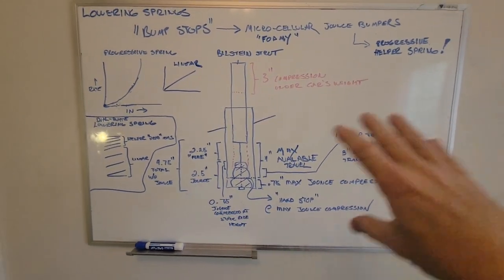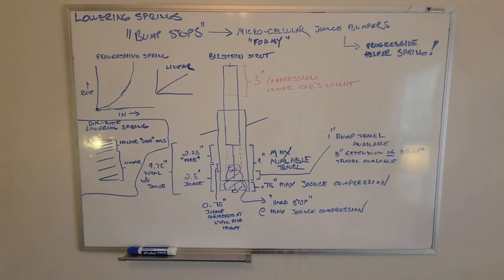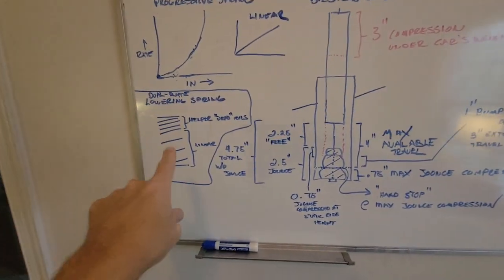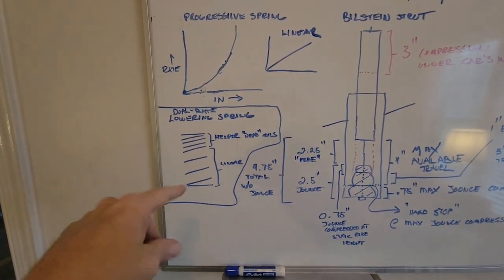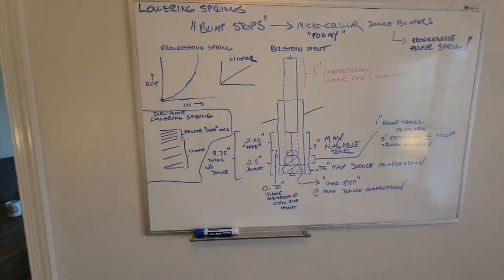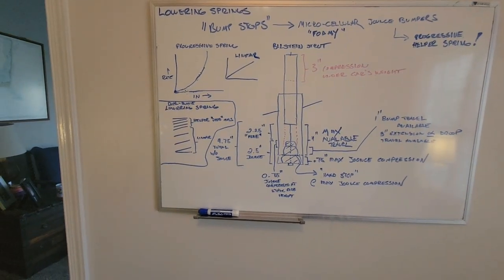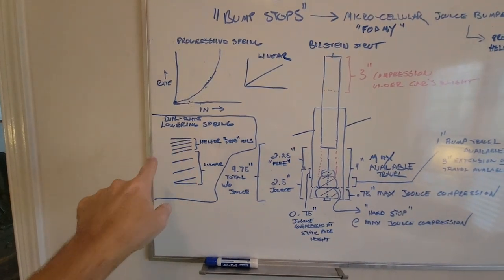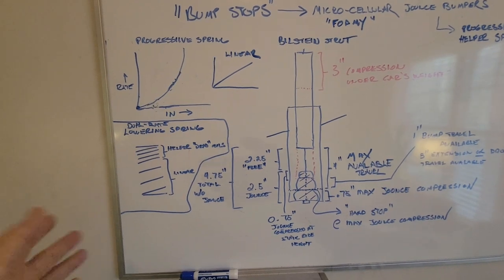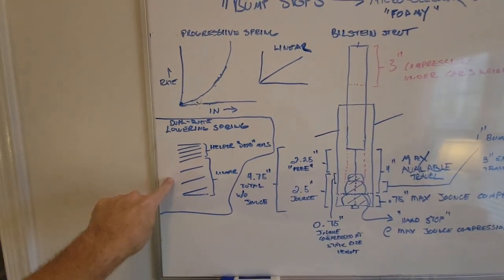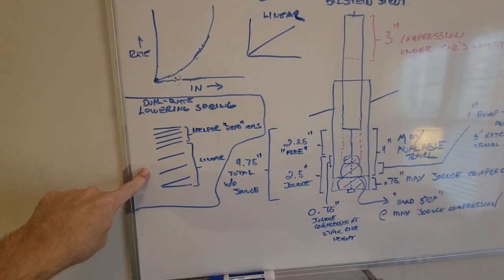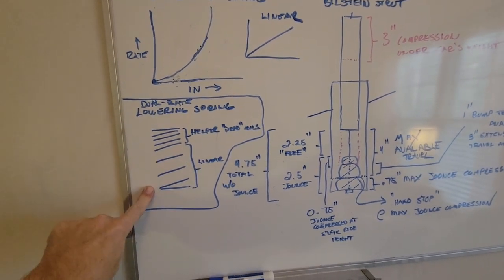So maybe you put 50 pounds on it and it compresses one inch. Now you put 50 pounds on it. The rate is actually now higher than it was before. And so now you need maybe 50 pounds only compresses it a half an inch and so on. And so your jounces are progressive. They're not linear springs. So I've got a big picture here with lots of measurements of a Bilstein strut, which is really common on a lot of performance cars as an upgrade. And I have a picture of what I'm going to call a dual rate lowering spring.